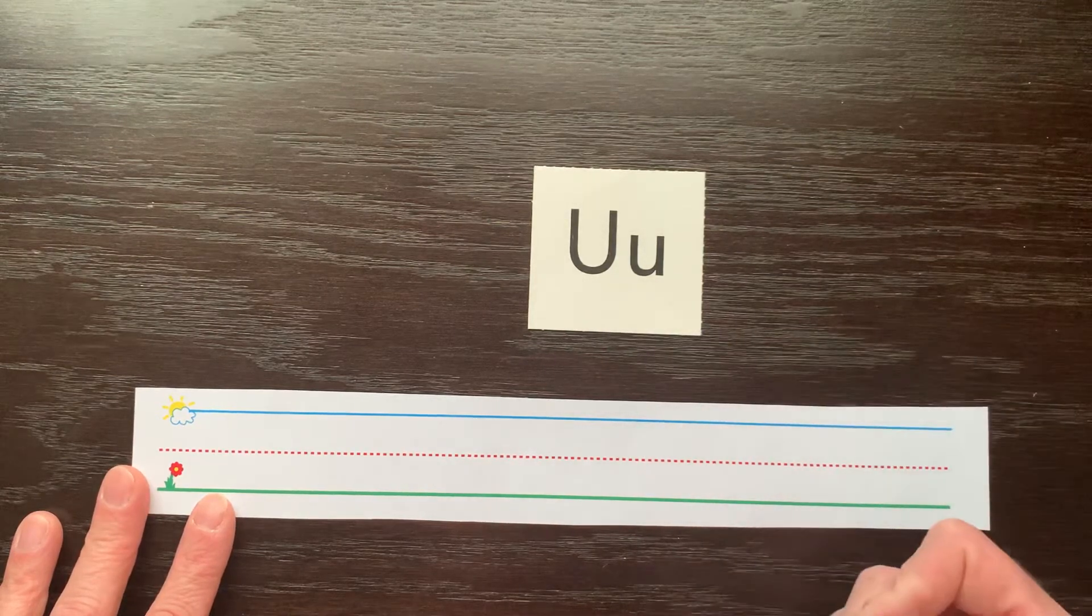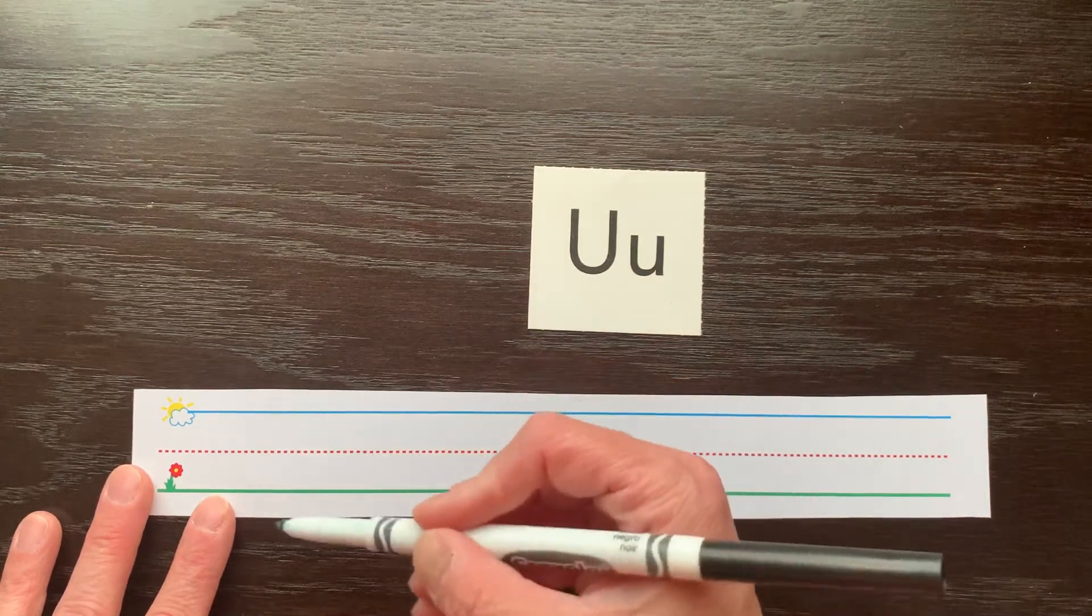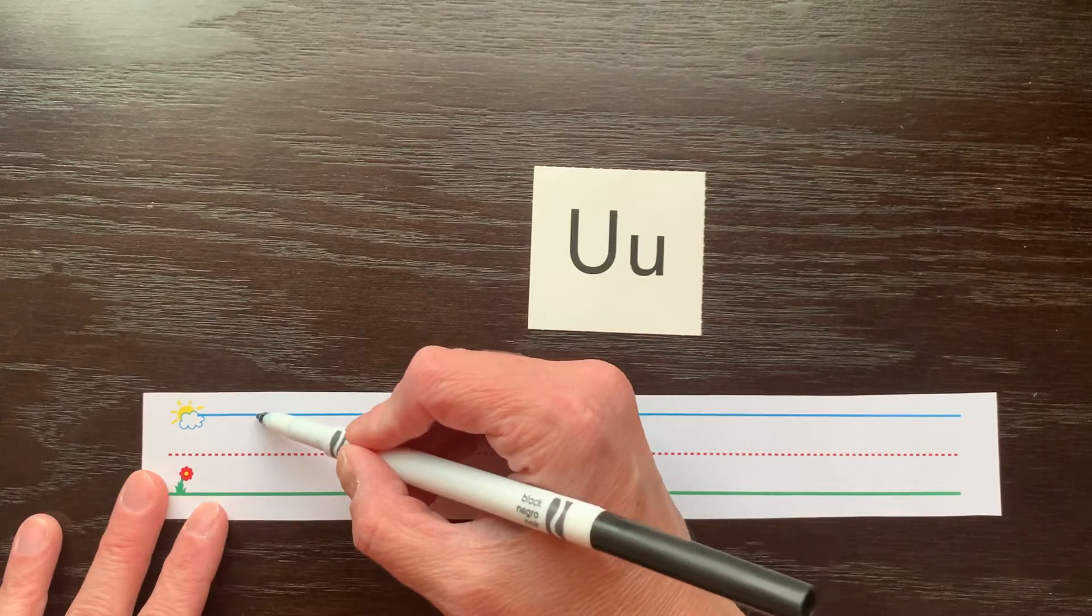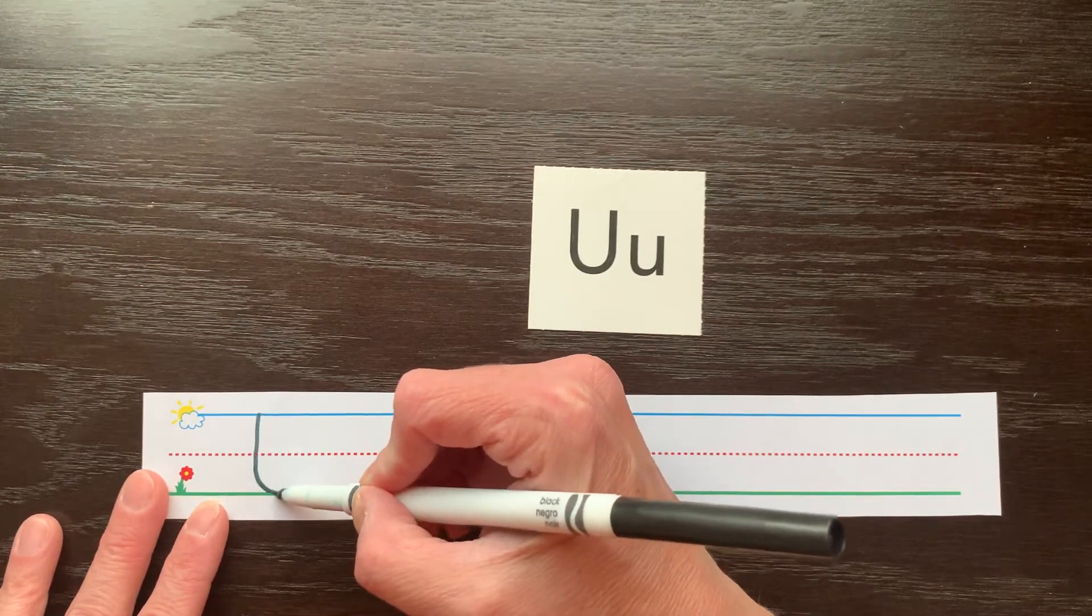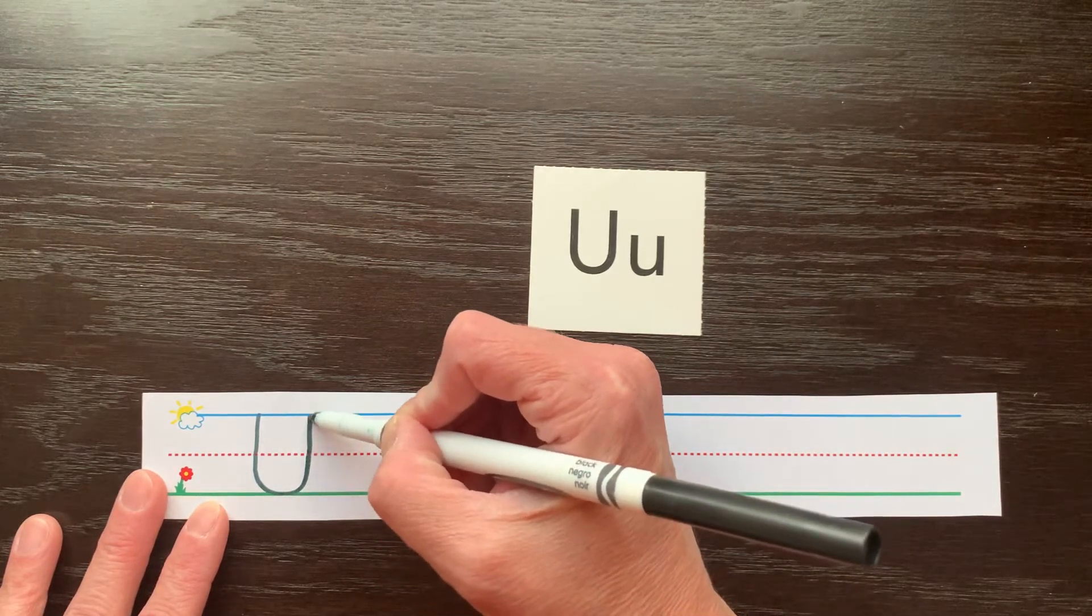Capital U, we do not pick up our pencil when we're writing it. We keep our pencil touching the paper the whole time. What we do is we start at the top, we go down towards the ground, and when we get close to the ground, we need to curve a curved line, and then we curve back up to the top.